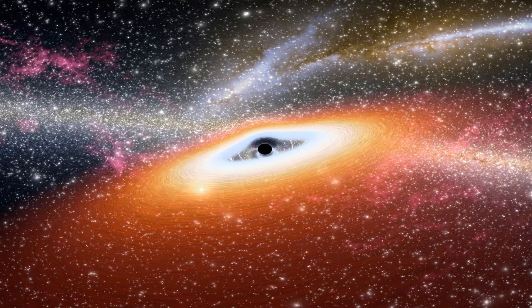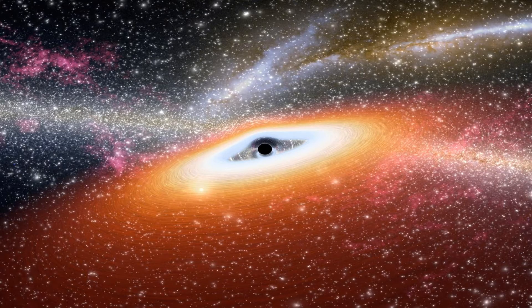Galaxies grow where the filaments cross as streams of gas flowing along filaments feed both galaxies as well as the central supermassive black hole within the quasar. The first black holes in the universe likely formed from the collapse of the earliest stars.